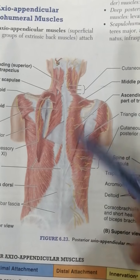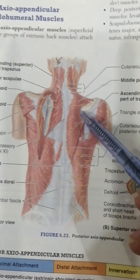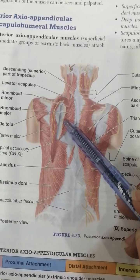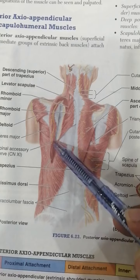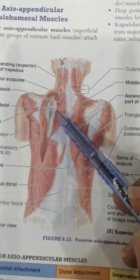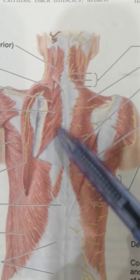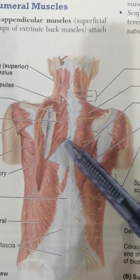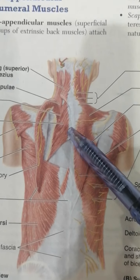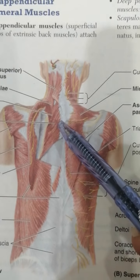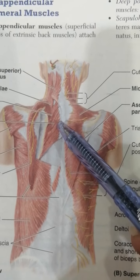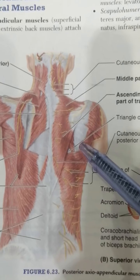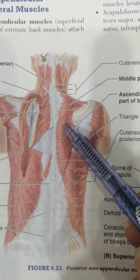Once we remove these superficial muscles we come inside. Here they have removed the flap and we can see the deeper structures — the rhomboids and levator scapulae — which lie deeply. They are also posterior axio-appendicular muscles but they are the deep muscles. So the first muscle is the trapezius muscle.